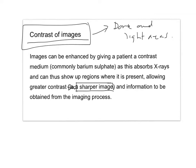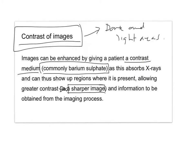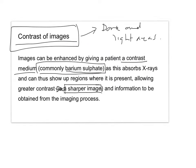Contrast can be improved by giving patients a contrast medium — something to drink. Commonly, barium sulfate, as bone, for example, absorbs barium sulfate. So as the x-ray is taken, the x-rays are absorbed by a greater amount, and it shows up regions where it is present. This causes greater contrast.